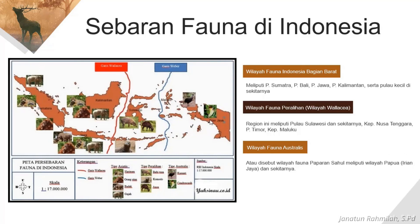Kebagian ketiga ada fauna australis — disebutnya fauna paparan sahul, meliputi wilayah Papua, Irian Jaya, dan sekitarnya. Kenapa disebutnya australis? Karena hewan-hewannya masih satu jenis dengan benua Australia. Wilayah australis ini ada jenisnya: kanguru, walabi, cendrawasih, kasuari, nuri, raja udang — banyak jenis burung. Ada juga kus-kus, landak Irian, beruang, dan kelelawar.